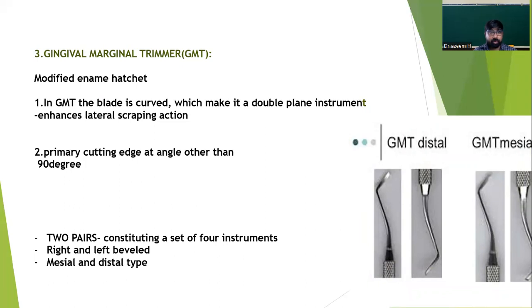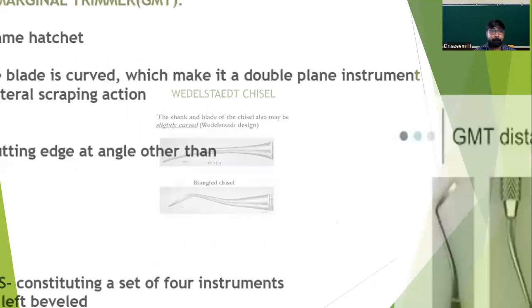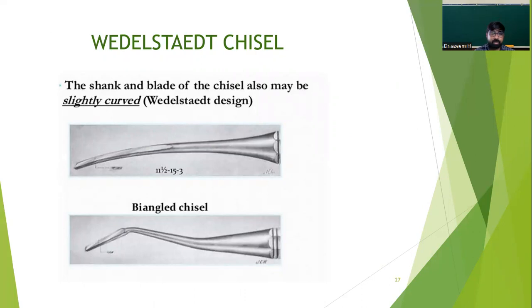The gingival marginal trimmer is a modified enamel hatchet with two modifications: first, the blade is curved making it a double-plane instrument, which enhances the lateral scraping action; second, the primary cutting edge is at an angle other than 90 degrees. This instrument is available as two pairs consisting of a set of four instruments — right and left beveled, mesial and distal types. Another modification of chisel is the Wedelstaedt chisel, in which the shank and the blade may be slightly curved.